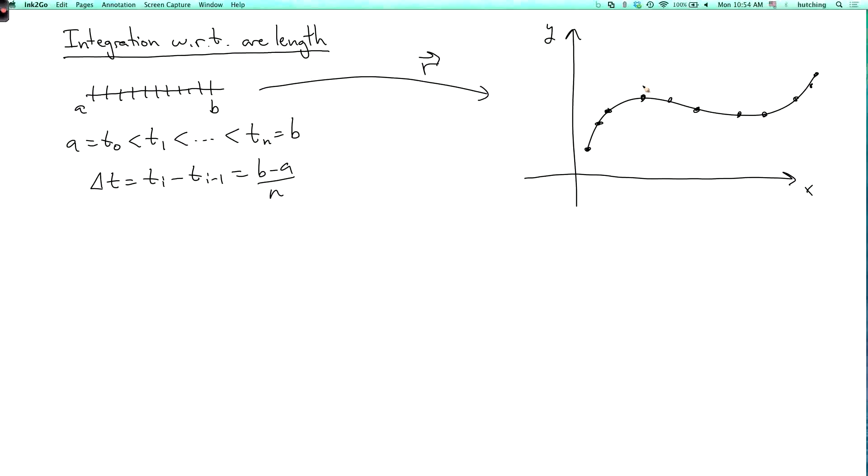So maybe this is the point r of ti, which is x of ti comma y of ti over here. And maybe this point is r of ti minus 1, which is x of ti minus 1 comma y of ti minus 1. And then there's a little vector which goes between them.